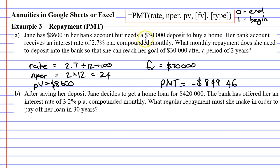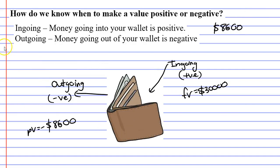So, if Jane wants to save up $30,000 over a period of two years, she needs to deposit $849.46 into her bank account at the end of each month. In case you're wondering why it's negative, it's because our repayment is an outgoing.